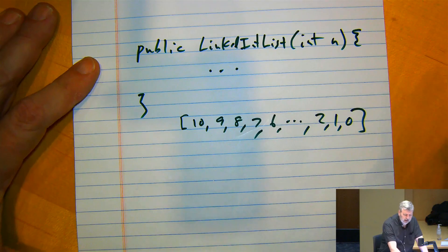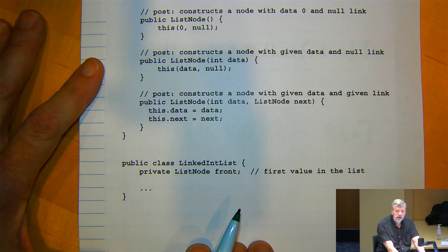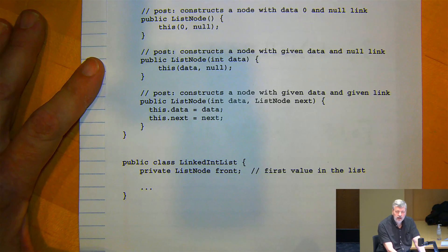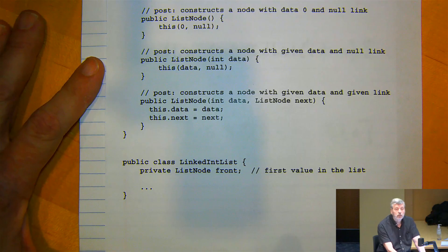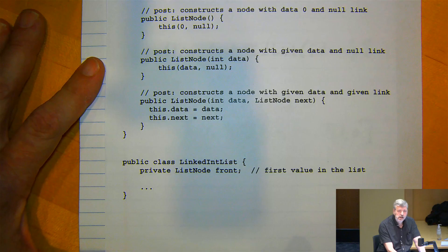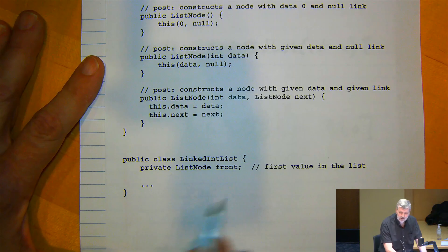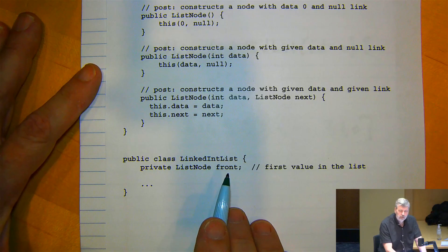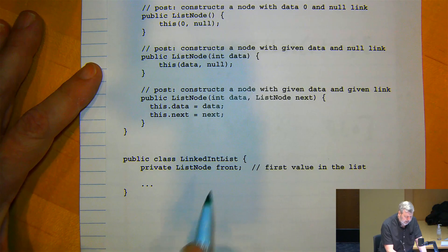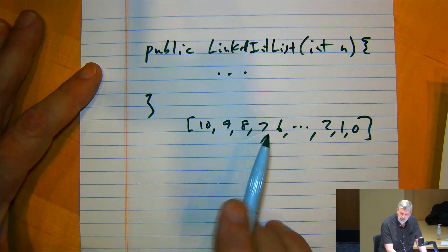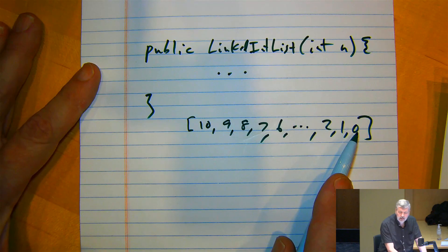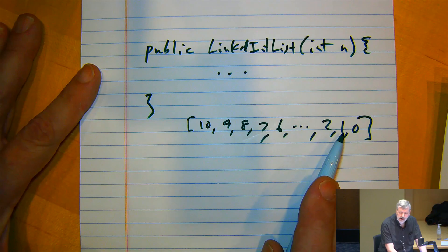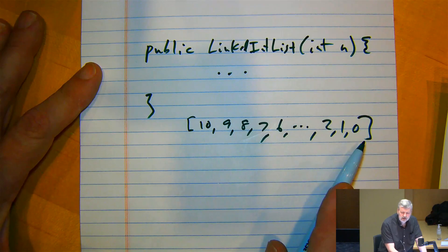One of the questions I always ask is where is it easiest to insert into this structure. For some reason people give the wrong answer — that it's easy to insert at the end. But the easier place to add is the front of the list, since we're storing a reference to front. So the way I'm going to solve this problem: I'll add the zero to the list first, then add a one in front of that, then a two in front of that, and so on.